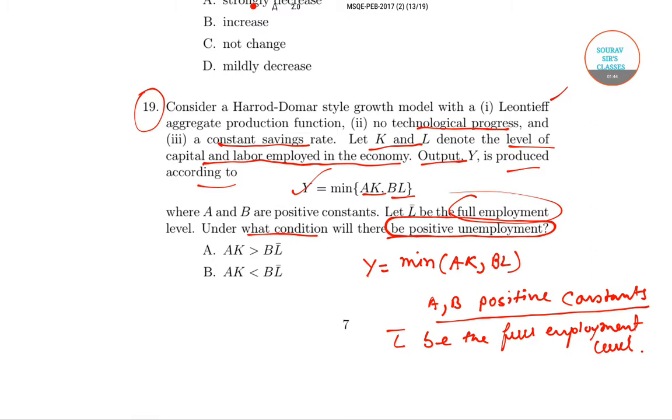Now if L bar is the full employment level, then we can say if AK is less than BL, then Y must be equal to AK. So we will consider there will be positive unemployment.